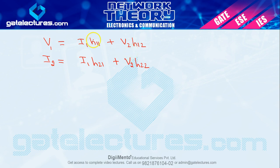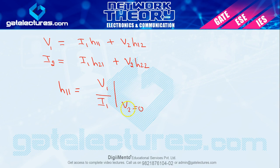बाकी parameters h11, h12, h21 and h22 हमेशा इस तरह से रहेंगे. अगर हम h11 define करें — h11 = v1/i1 when v2 = 0. आप clearly देख पा रहे हैं यह voltage upon current है, and voltage upon current आपका impedance होता है. इसे हम input impedance कहेंगे — क्योंकि यह 1 upon 1 है.